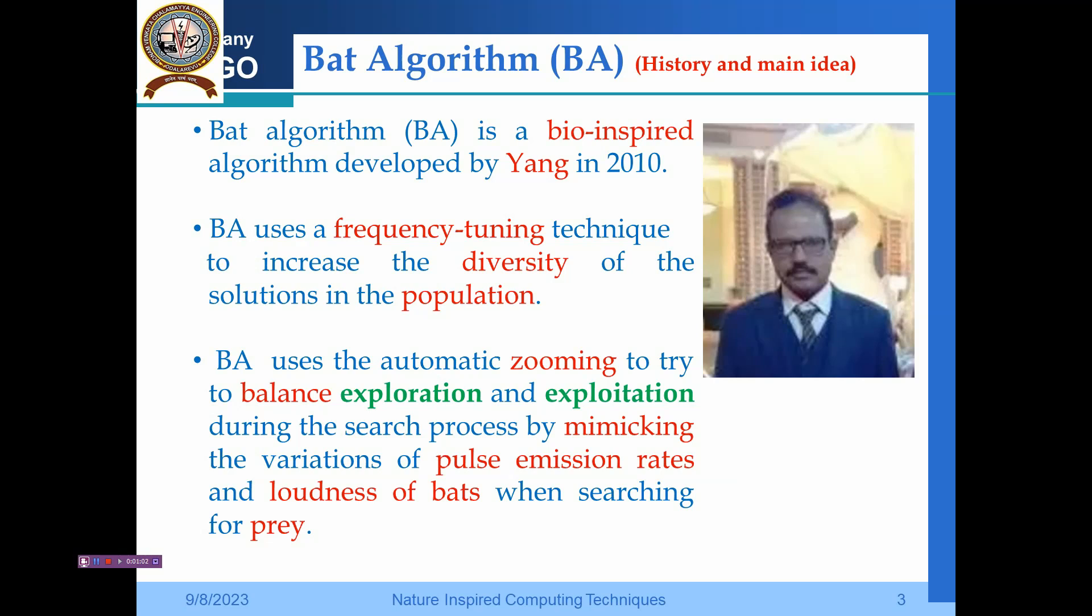We are having two things: exploration and exploitation. This Bat Algorithm uses automatic zooming to try to balance between exploration and exploitation during the search process by mimicking the variations of pulse emission rates as well as the loudness of the bats when searching for prey.